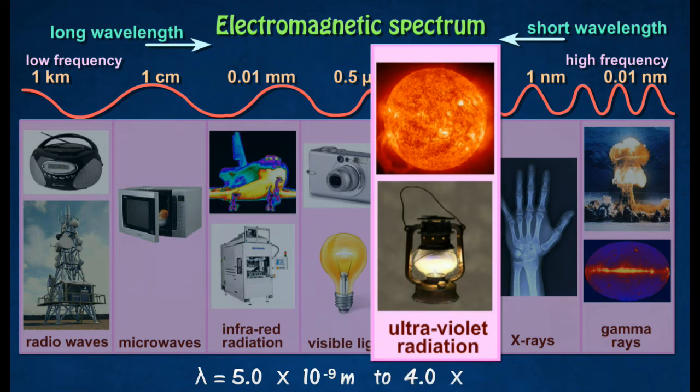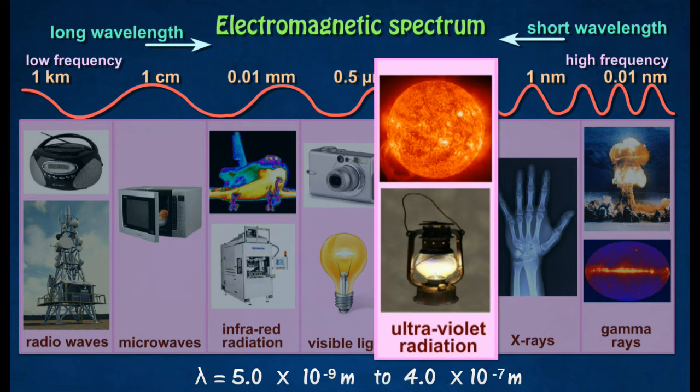Ultraviolet radiation produces vitamin D in the skin. Overexposure can cause skin cancer and damage to the retina. It also causes fluorescent effects used for detecting forged notes.